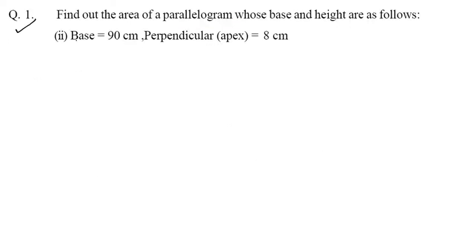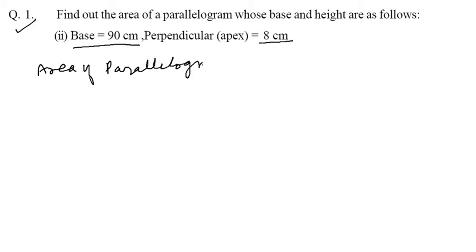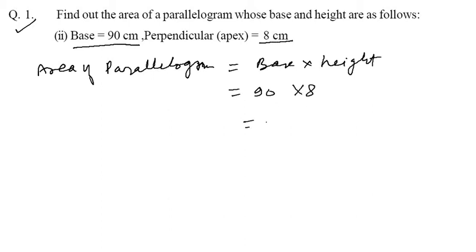Come to the second part of Question 1. Base is given as ninety centimetre and height is given as eight centimetre. Area of parallelogram is equal to base into height — ninety into eight — eight nines are seventy-two, so seventy-two square centimetre. That is your answer.